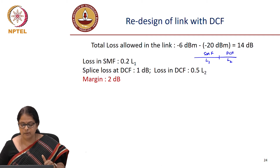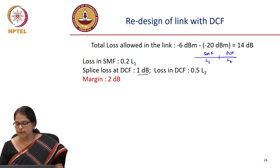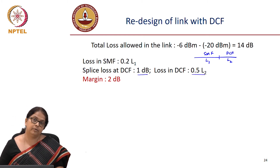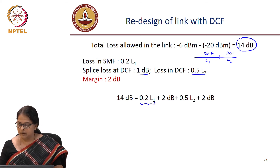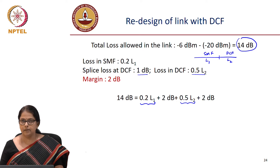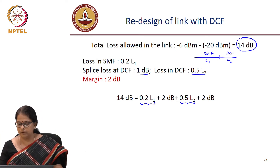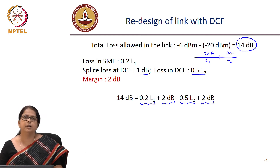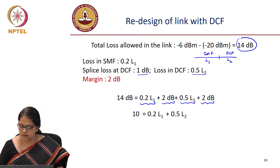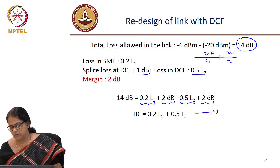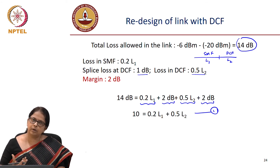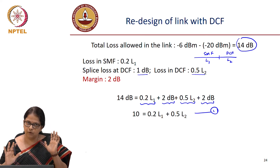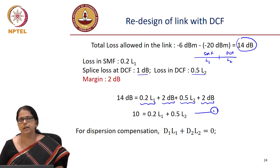We need a margin of 2 dB and the splice loss at the DCF is 1 dB. Loss in DCF is 0.5 × L2. The loss budget allows 14 dB total. So the equation is: 10 = 0.2 L1 + 0.5 L2, accounting for the 2 dB margin and 1 dB splice loss — this is equation one. The second constraint is that I use the relation D1·L1 + D2·L2 = 0, requiring the total dispersion to be zero.